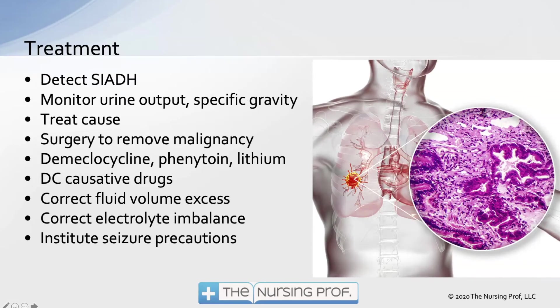Treatment for SIADH involves detecting and confirming the diagnosis, monitoring urine output and specific gravity, and treating the underlying cause. Surgery may be needed to remove a malignancy — such as the small cell lung tumor that can cause pulmonary SIADH. Certain drugs can also cause SIADH and should be discontinued. Correct fluid volume excess and electrolyte imbalances, and institute seizure precautions.